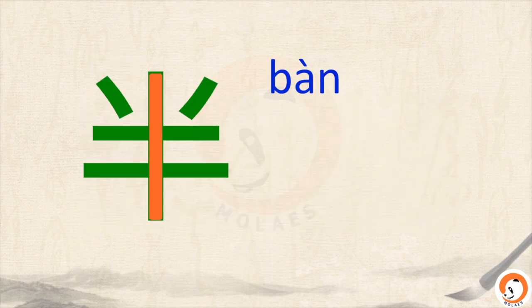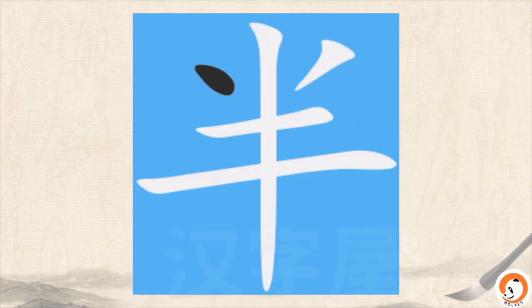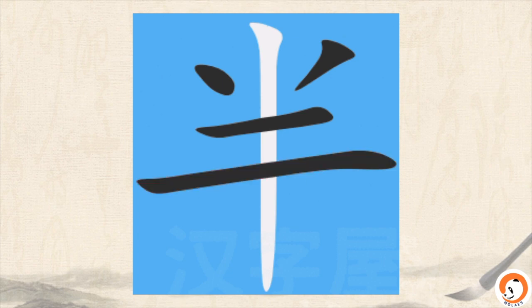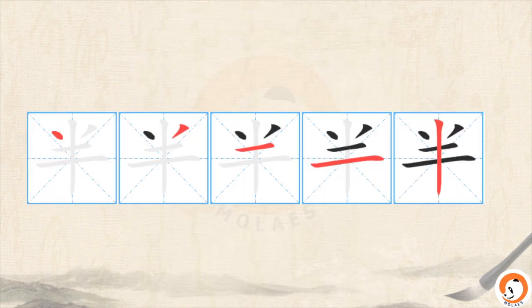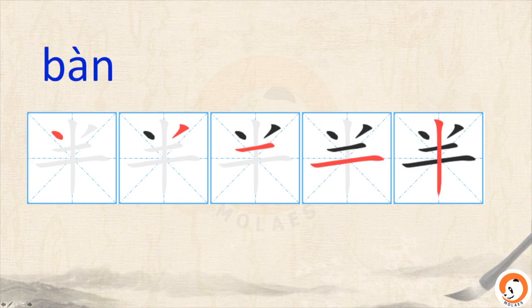The other example is this one: 半. It means half. 半. 一, 二, 三, 四, 五 — five strokes. Let's practice together: 一, 二, 三, 四, 五. 半, half.